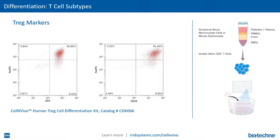In the first example, after five days of culture using the CellXVivo regulatory T-cell kit, the left flow diagram highlights CD4-positive T-cells expressing the Treg marker FOXP3, while the right chart highlights expression of both Treg markers FOXP3 and CD25.